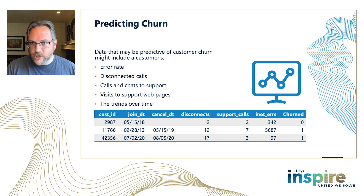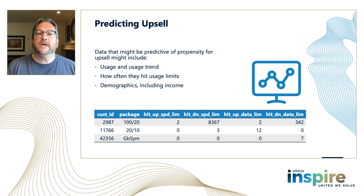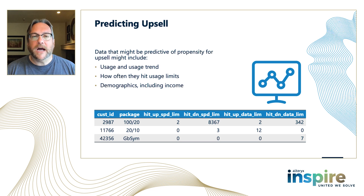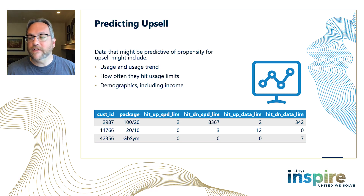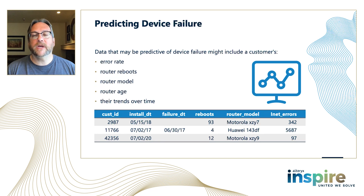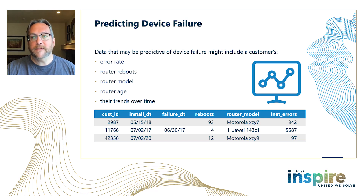The next potential use case is predicting upsell — similar but in a way opposite. We have a sales organization and we'd like them to upsell customers to the next level of service, but obviously some customers are more open to upsell. We might look at things like how often the customer is hitting their speed limit — you can see this first customer is hitting their speed limit quite a bit, while the second customer is hitting it less. We can rank customers in order of how likely we think they'll be open to an upsell opportunity. Similarly, we want to predict device failure: if a router is starting to go bad, we'd like to contact the customer and replace it before they start having problems and outages, because having these issues might cause them to churn.